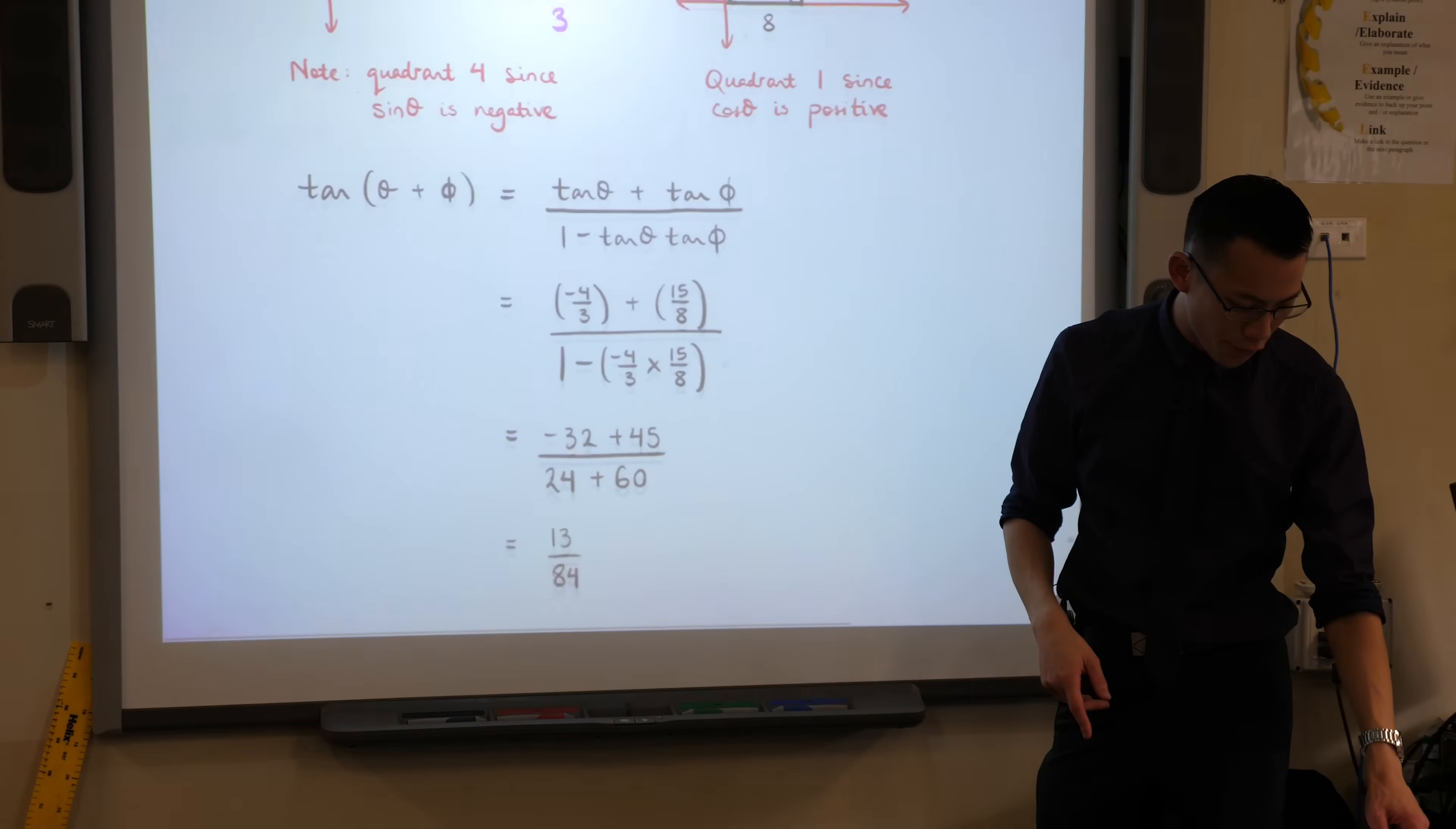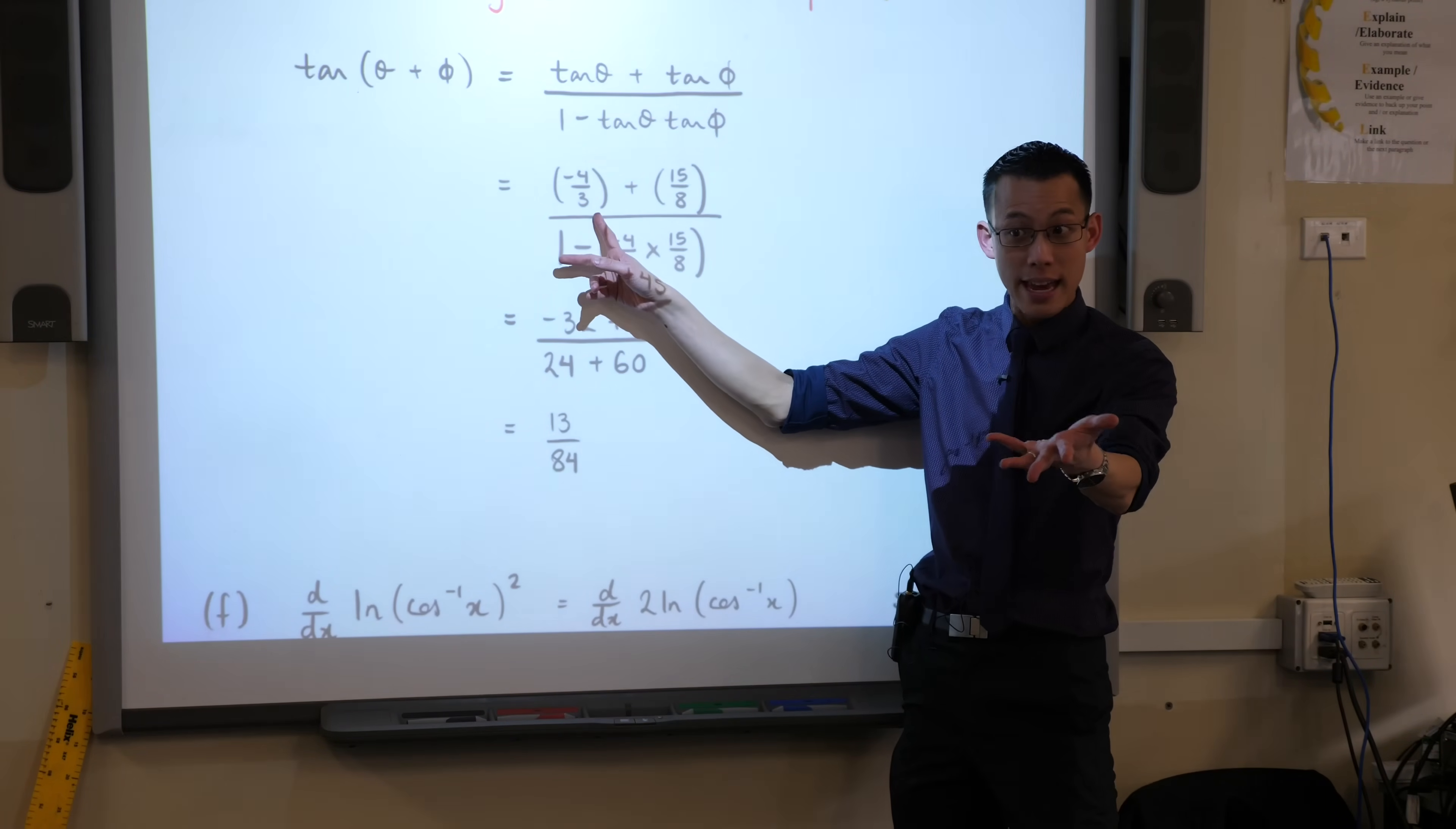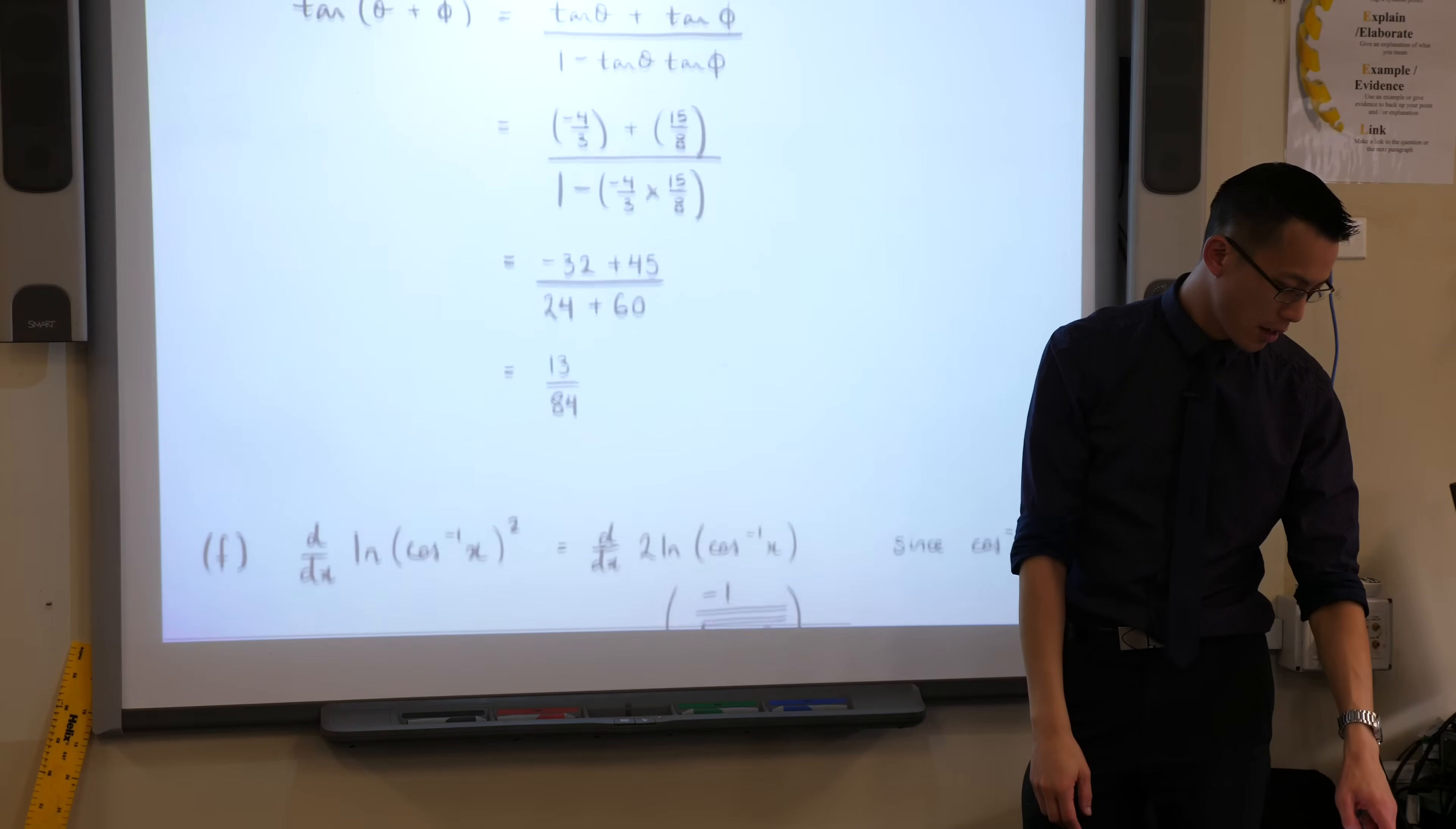There you then can infer your values for tan of each of those angles by reading off the triangles. This guy is a fourth quadrant angle. Tan is negative in the fourth quadrant. This phi is in the first quadrant, so everything's positive. That's why I have 15 on 8, not negative 15 on 8.